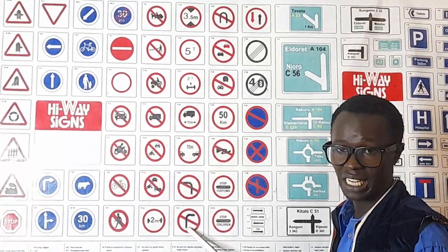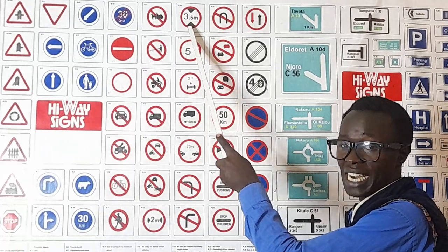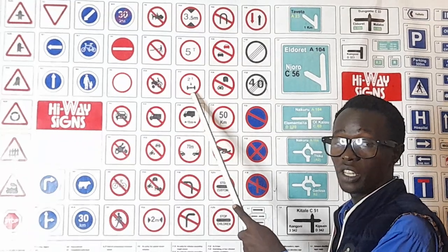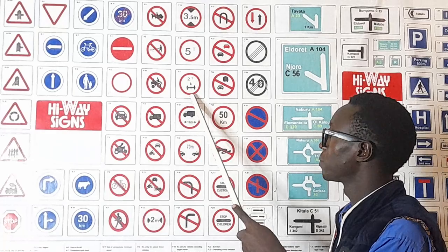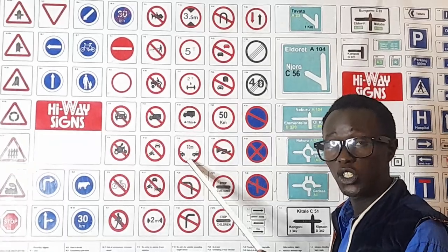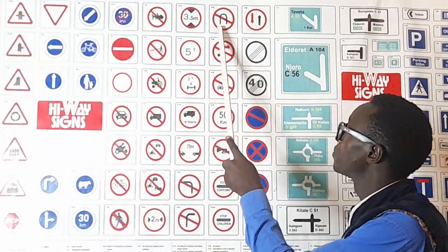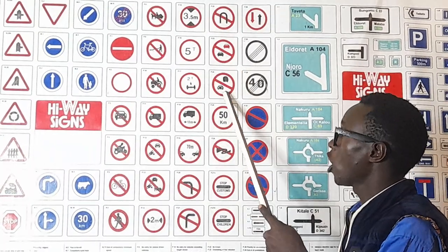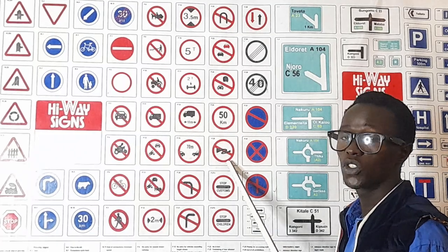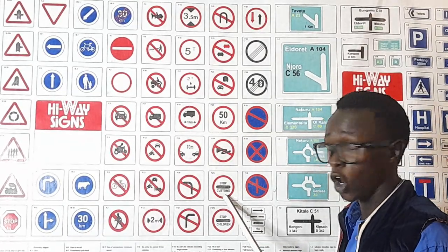No left turn. No right turn. No entry for vehicles exceeding the height shown. No entry for vehicles exceeding the weight shown in tons. No entry for vehicles exceeding the weight shown per one axle. Driving less than the distance shown is prohibited. No left turn. No right turn. No U-turn. No overtaking for saloon vehicles. No overtaking for heavy commercial vehicles. Maximum speed limit. Stop at control post, or stop at police check.